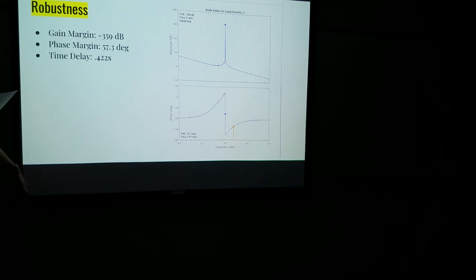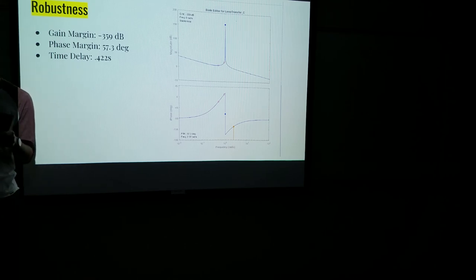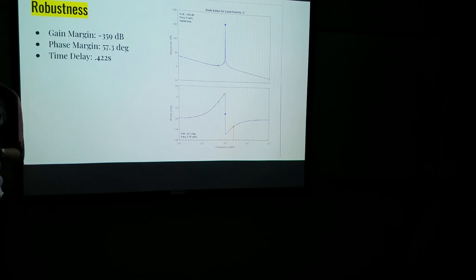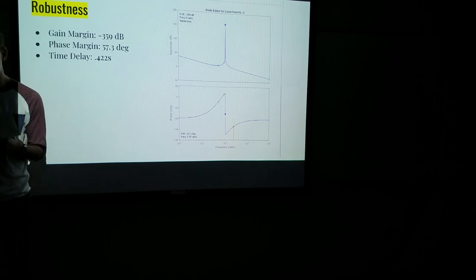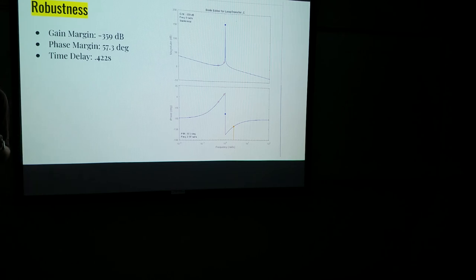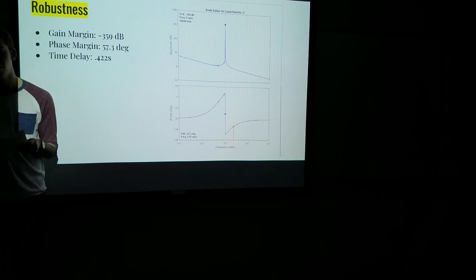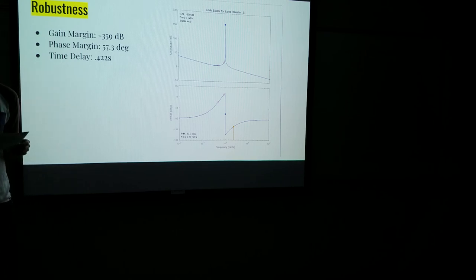And moving on, our phase margin is 557.3 degrees and our time delay is 0.422 seconds. This is also our max time delay. This time delay really isn't an issue because the controller is right on the gantry crane. This should allow for more flexibility for the operator in regards to response time. With a delay of only 0.422 seconds, the user will be able to complete the tasks in the correct time.